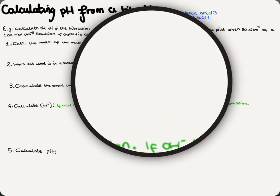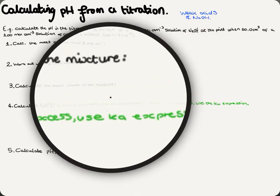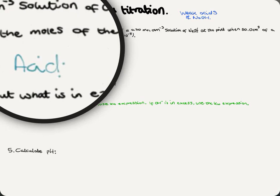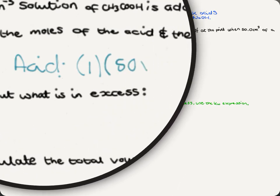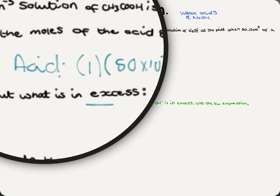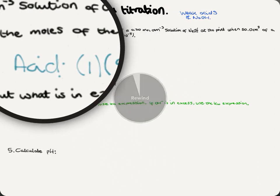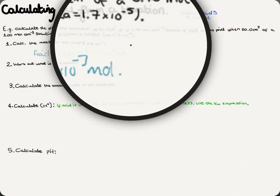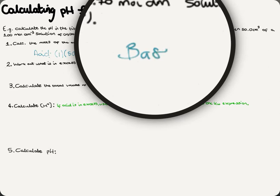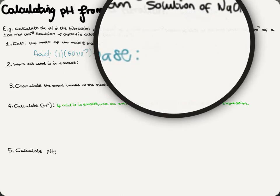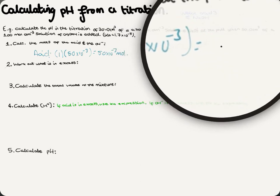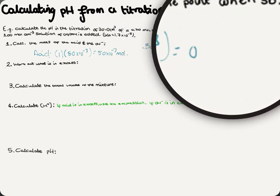Following the same steps, calculate the moles of acid and base. The acid: concentration 1 × volume 50 × 10⁻³ dm³ = 50 × 10⁻³ moles. The base: concentration 0.70 × volume 30 × 10⁻³ dm³, converting to decimetres, gives 0.021 moles.